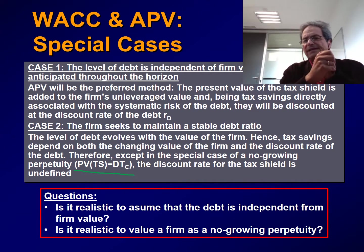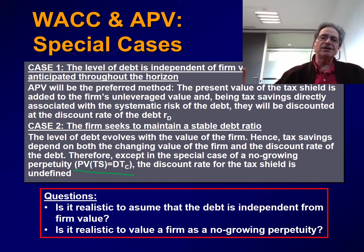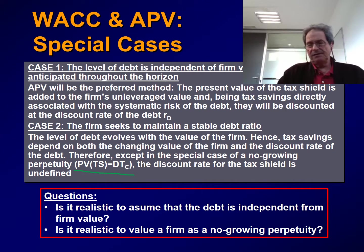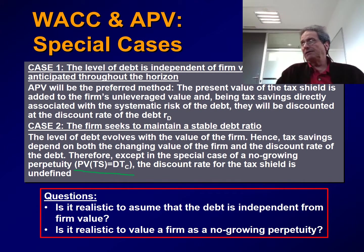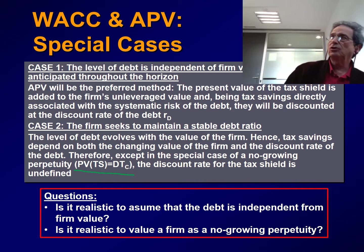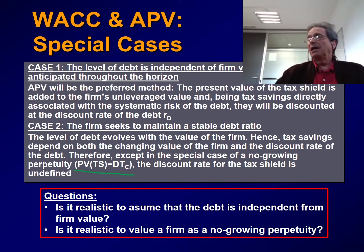Is it realistic to assume that the debt is completely independent from the value of the firm? Of course not, because it is to be expected that the larger the firm, the more debt the firm will have. So there must be some relationship between the value of the firm and the value of the debt — Case 1 is unrealistic. Is it realistic to value a firm as a no-growth perpetuity? Of course not. It is very strange to have a firm whose cash flows are no-growth perpetuities — practically impossible. So Case 2 is also very unrealistic.